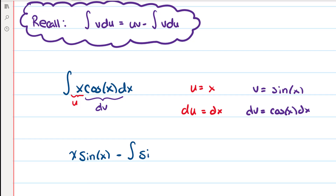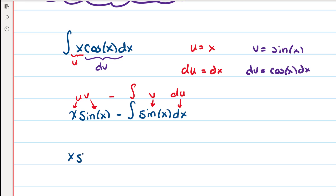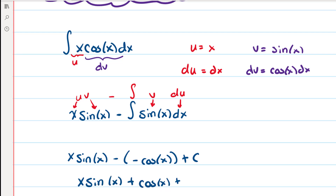So sine of x times du, which is dx. The formula is uv minus the integral of v du, and all the pieces line up. Then we just keep working it out: x sine of x minus the antiderivative of sine of x, which is negative cosine, plus c. So the final answer is x sine of x plus cosine of x plus c.